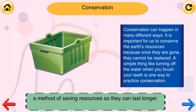Conservation: A method of saving resources so they can last longer. Conservation can happen in many different ways. It is important for us to conserve the earth's resources because once they are gone, they cannot be replaced. A simple thing like turning off the water when you brush your teeth is one way to practice conservation.